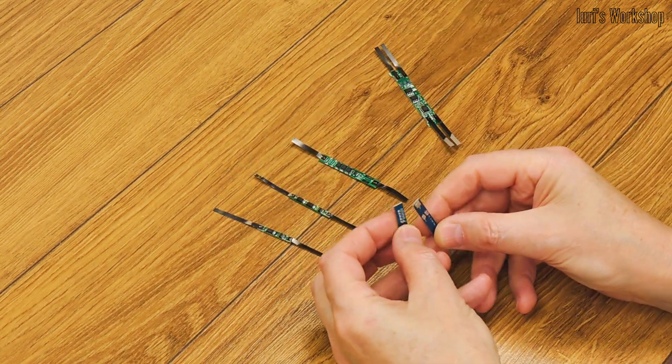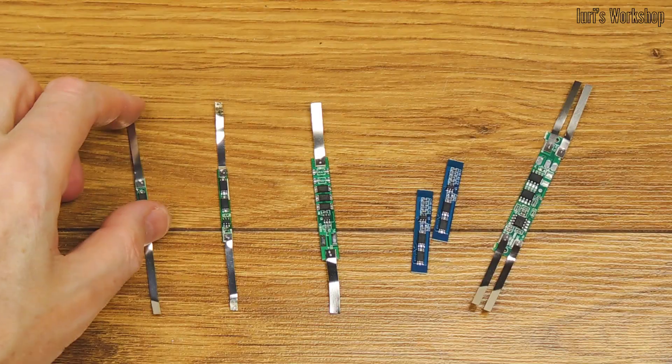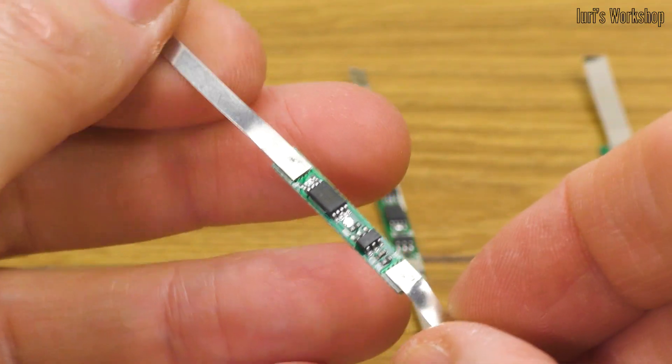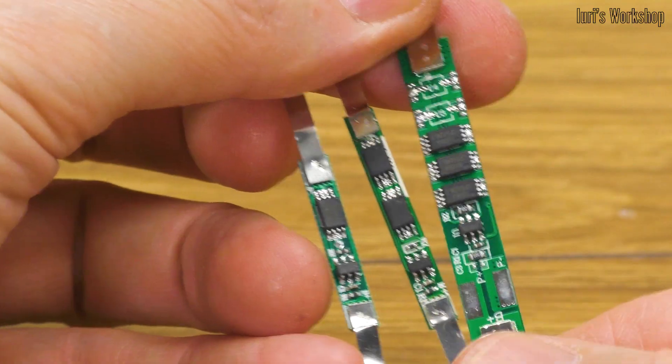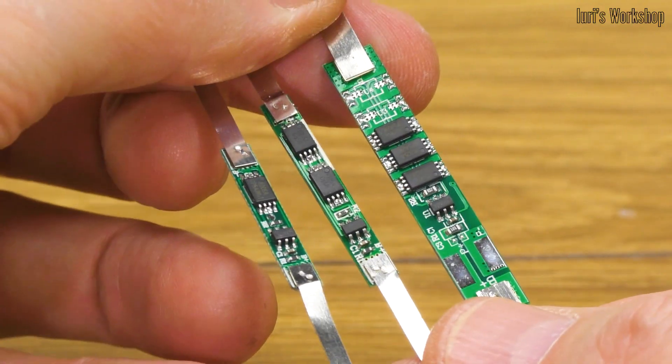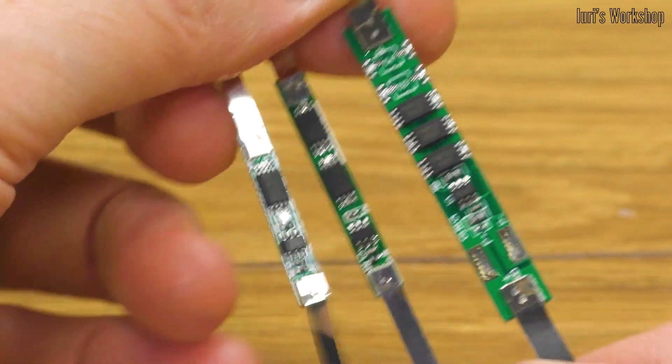Each cell of a lithium-ion battery must be protected from excess charge current, charge voltage, and discharge current. All these parameters are provided by ready-made protection boards, which should be selected based on the load current and the number of cells connected in series.